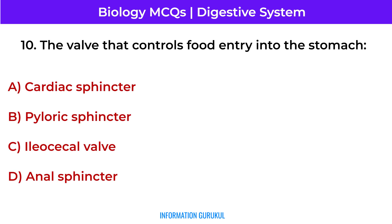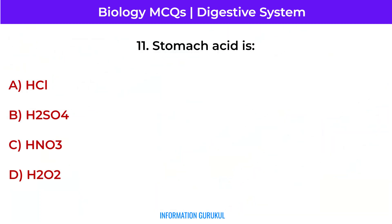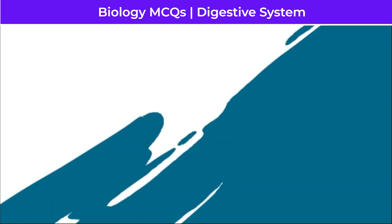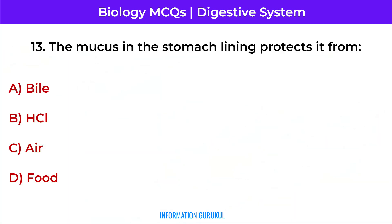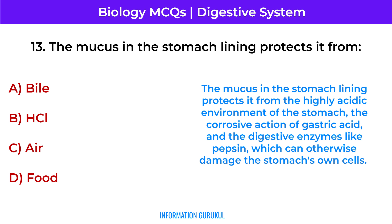The valve that controls food entry into the stomach is the cardiac sphincter. Stomach acid is hydrochloric acid. Which enzyme begins protein digestion in the stomach? Pepsin. The mucus in the stomach lining protects it from the highly acidic environment of the stomach, the corrosive action of gastric acid, and the digestive enzymes like pepsin, which can otherwise damage the stomach's own cells.